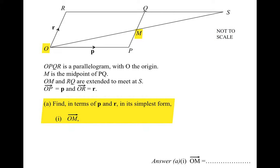The question says find, in terms of P and R in its simplest form, the vector OM. So the vector OM is the movement that takes us from point O to point M, but we're only allowed to make that movement in terms of R's and P's.